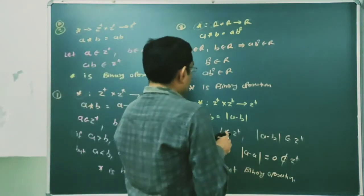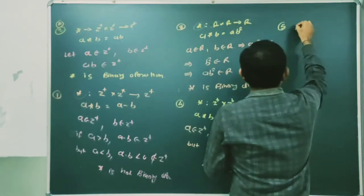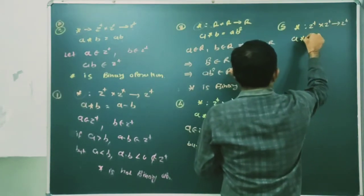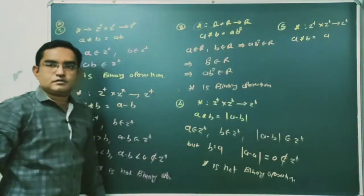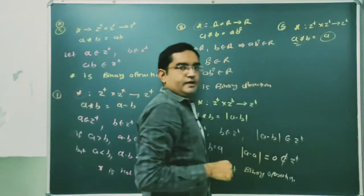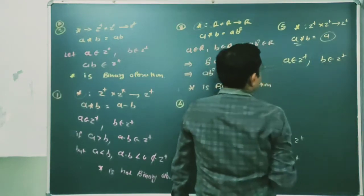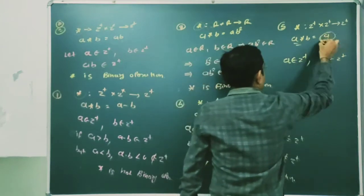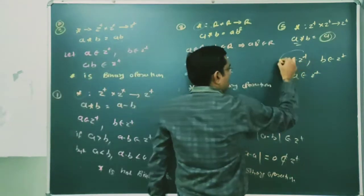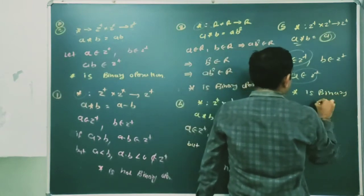Fifth question: a binary operation on Z+ is given, which is defined as a★b = a. So when we perform this operation on two numbers, we get the first number a. If a ∈ Z+ and b ∈ Z+ and we perform this operation, it gives us a. Since a ∈ Z+, the binary operation star is a binary operation.